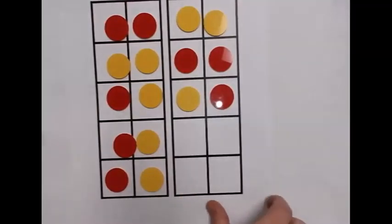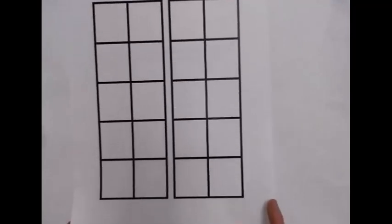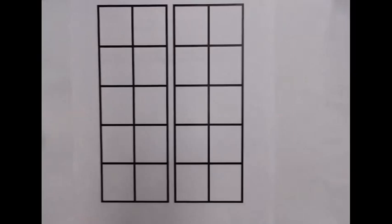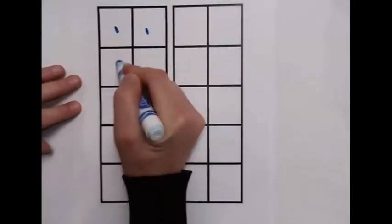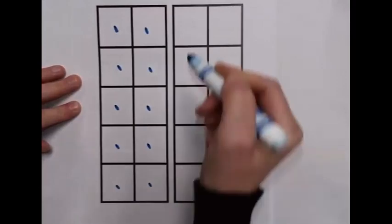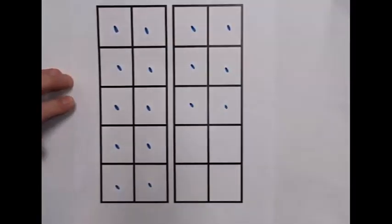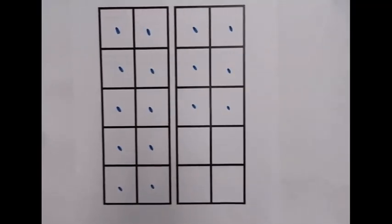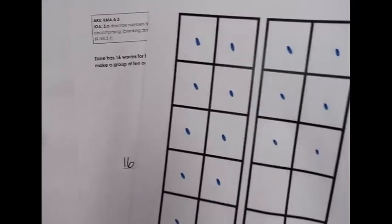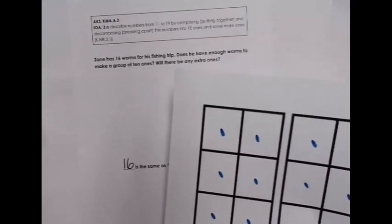At the representational level, students draw instead of using concrete manipulatives, but may still use the 10-frame for organization. Drawing 16 dots in a 10-frame — filling 10 spots, with 6 remaining — students can see the group of 10 ones and identify the 6 extra ones. So 16 is the same as 10 ones and 6 ones. If Zane has 16 worms, he can make a group of 10 and have 6 worms left over.